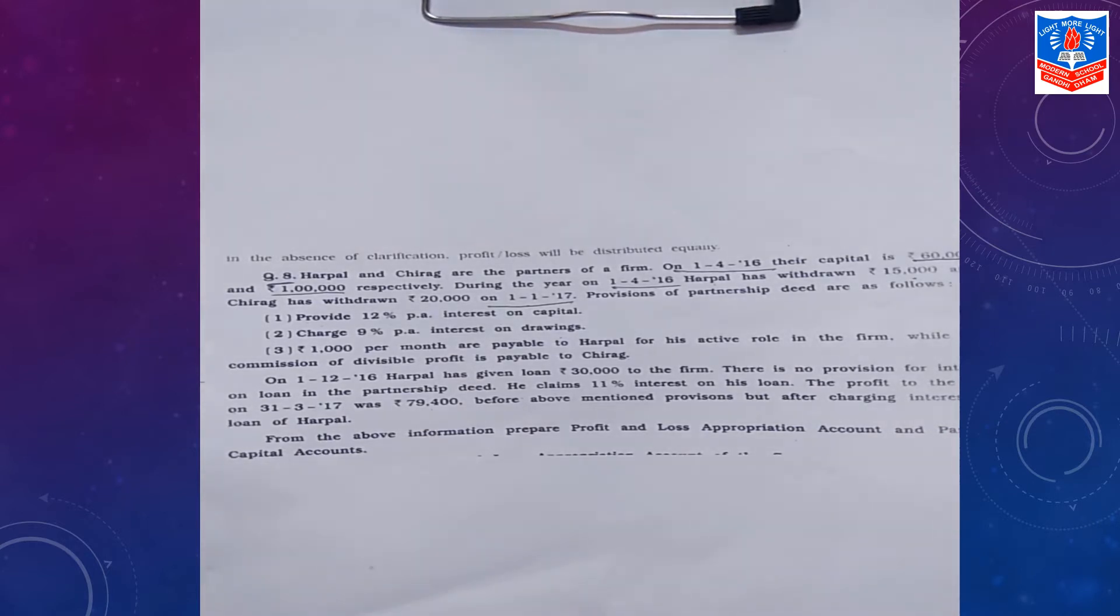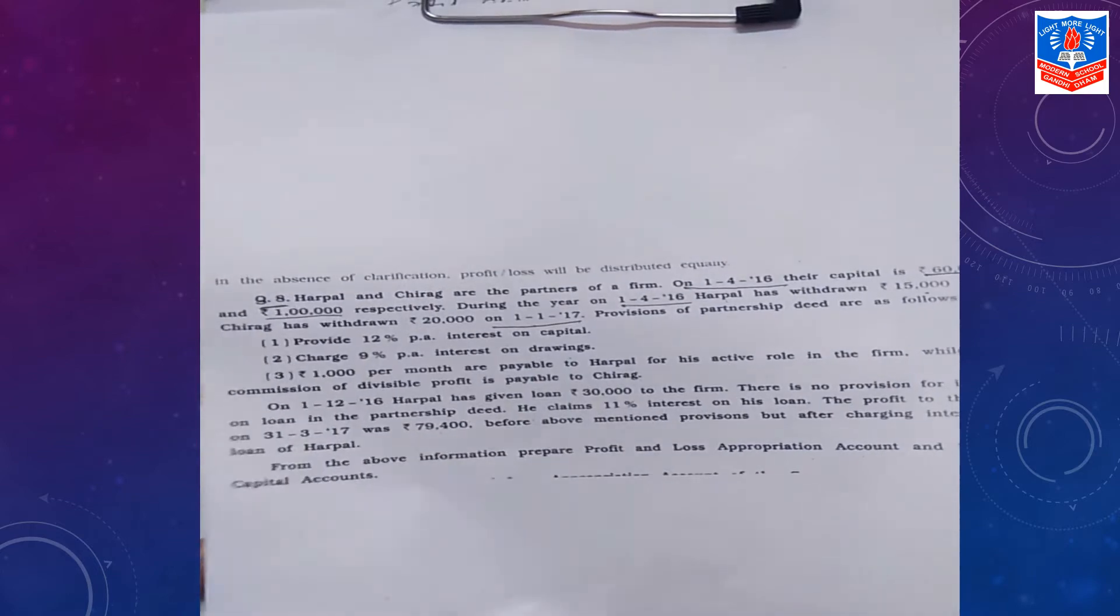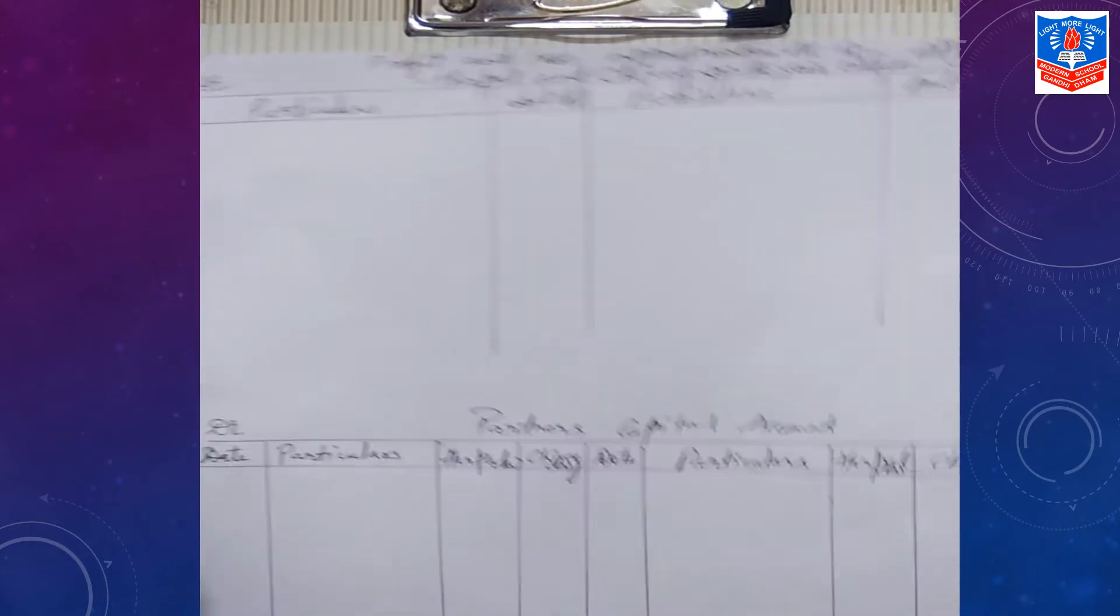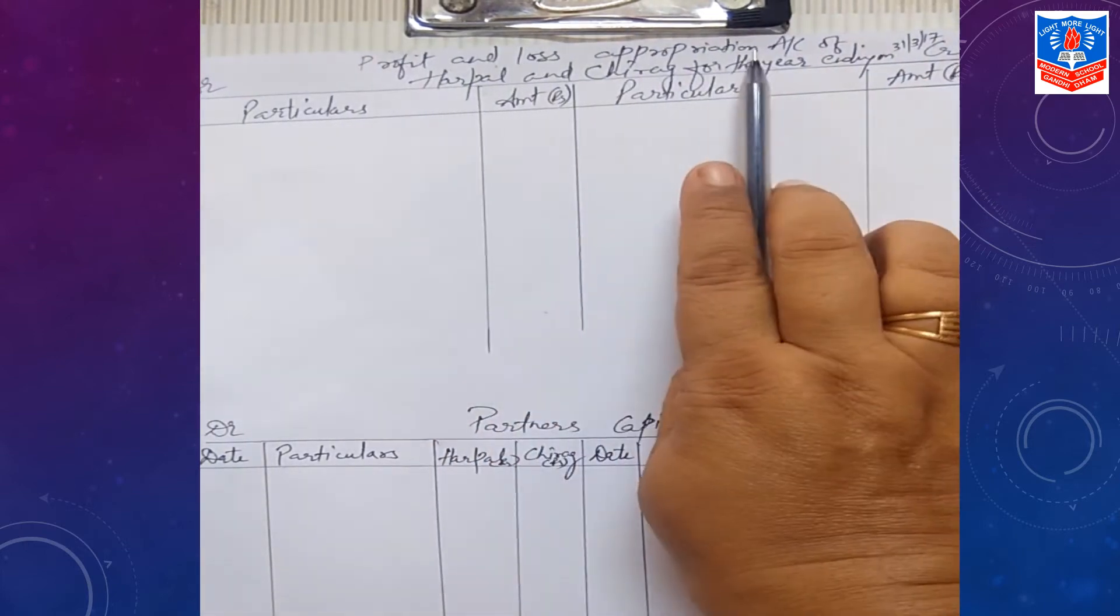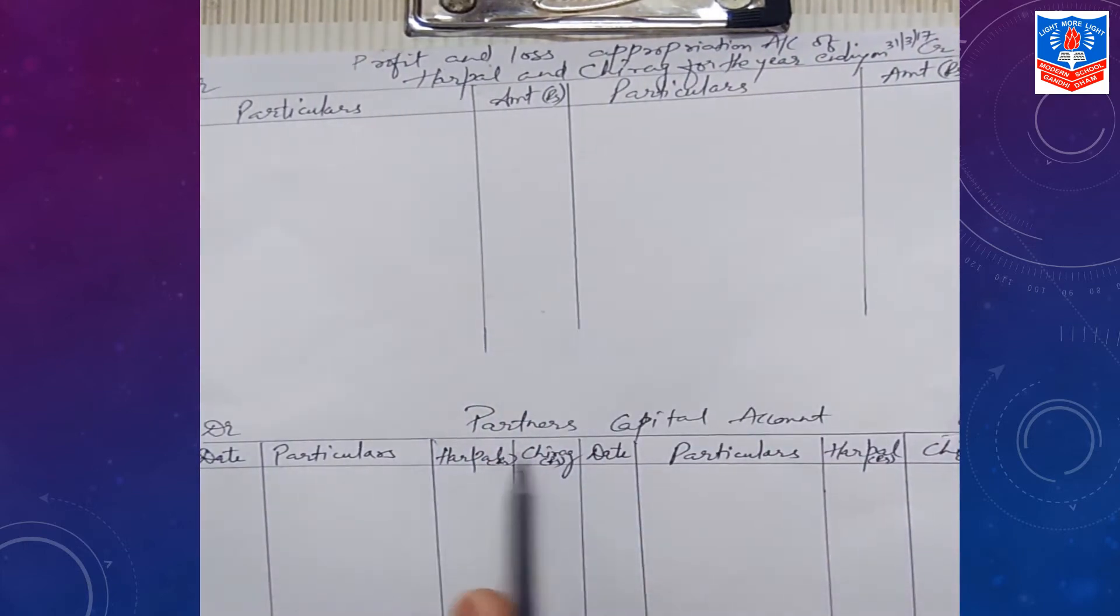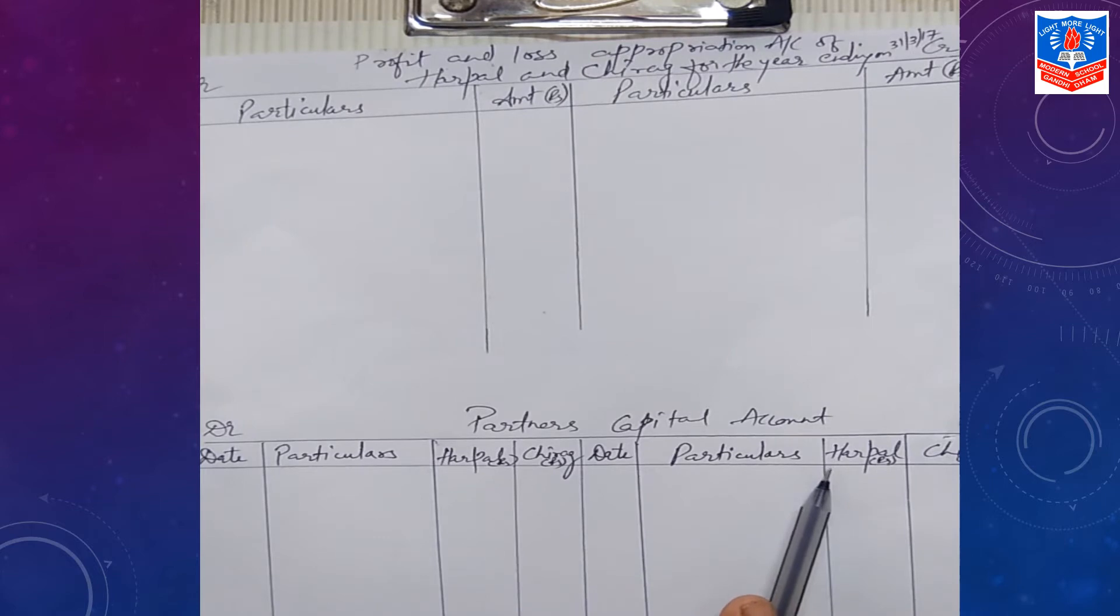Before above all provisions and even interest on loan of Harpal. Now, from this we are supposed to prepare profit and loss appropriation account and partner's capital account. Always read question carefully then go for solving it. Let us check how to solve it. For solving this question, we need to prepare profit and loss appropriation account and even partner's capital account.